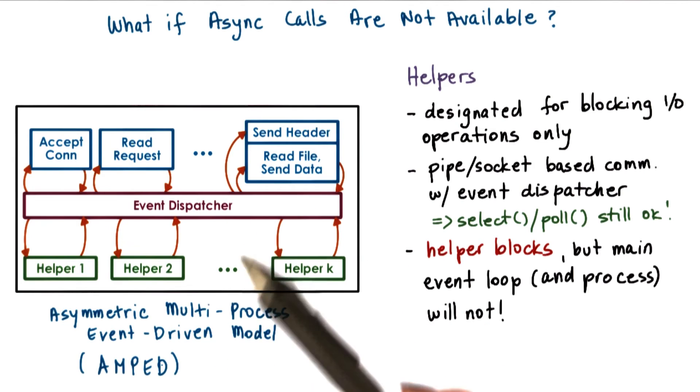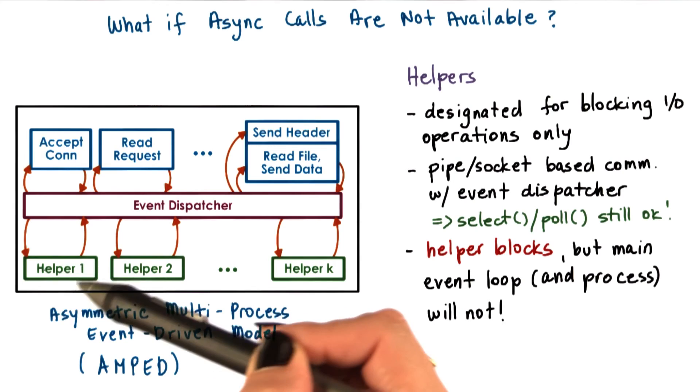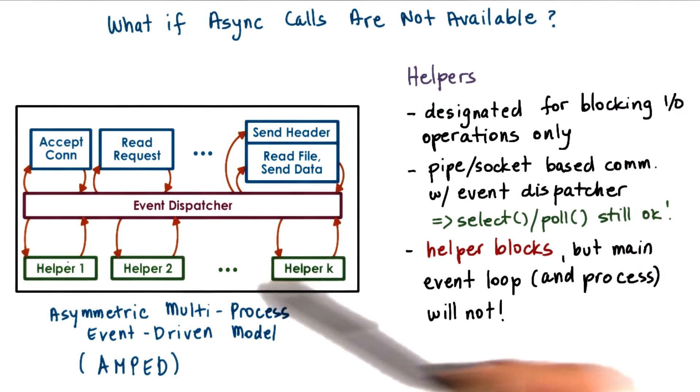Therefore, they call this model AMPED: Asymmetric Multiprocess Event Driven Model. It's an event-driven model, it has multiple processes, and these processes are asymmetric. The helper ones only deal with blocking IO operations, and then the main one performs everything else.